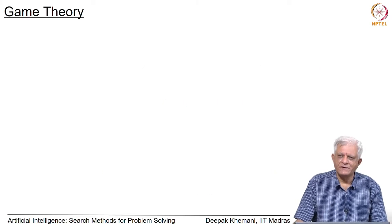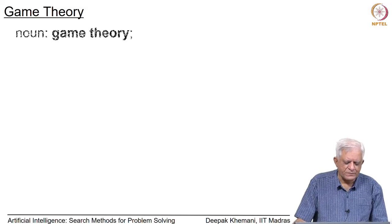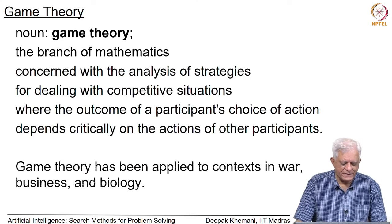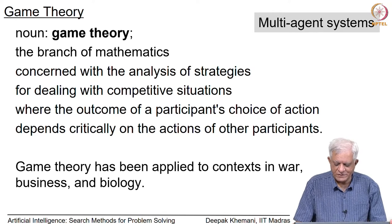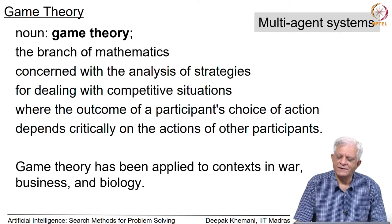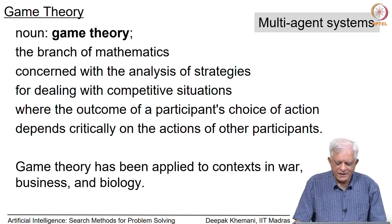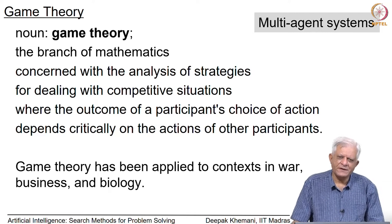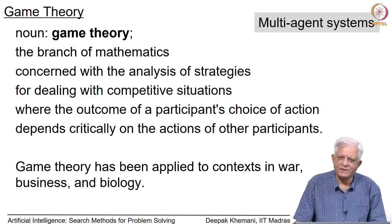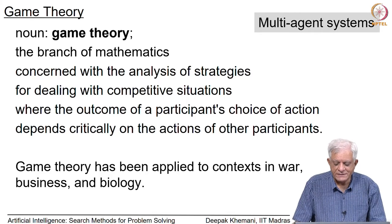Let us start with the definition of game theory as given in a dictionary. Game theory is the branch of mathematics concerned with the analysis of strategies for dealing with competitive situations, where the outcome of a participant's choice of action depends critically on the actions of other participants as well. It is a multi-agent scenario where we consider how an agent should act. In game theory, we assume that agents are rational and act completely selfishly and to the best of their effort. Game theory has been applied to various scenarios — economics, war, business, biology — and used to study what should be the correct actions of agents in such scenarios.